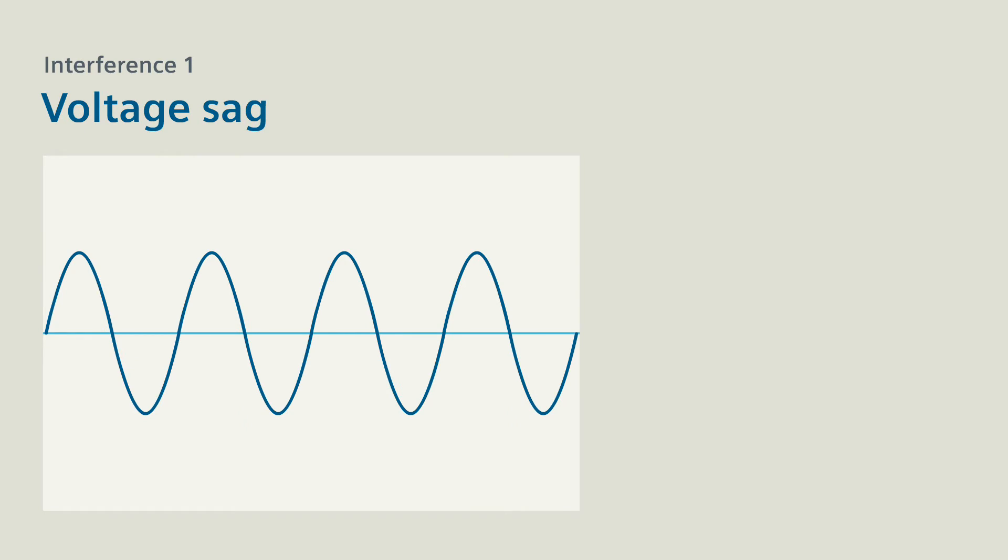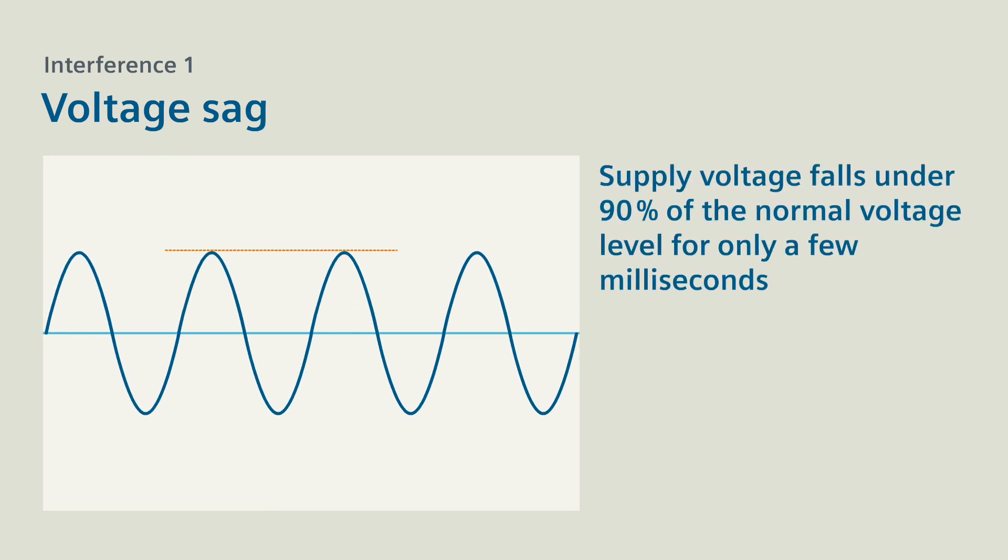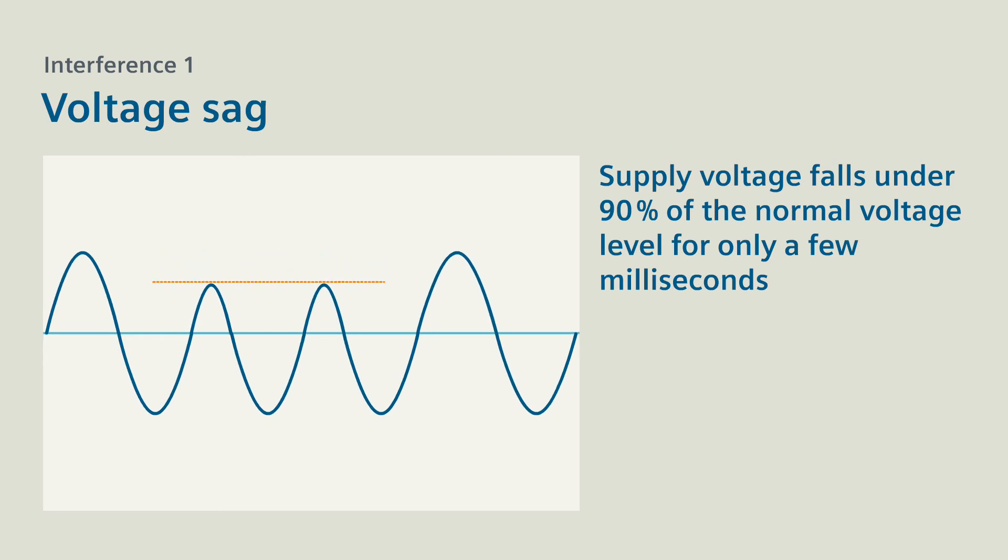Interference 1: Voltage sag. With voltage sag, supply voltage often falls under 90% of the normal voltage level for only a few milliseconds. What merely appears as a flicker for lighting can already lead to storage loss and data error for IT systems.